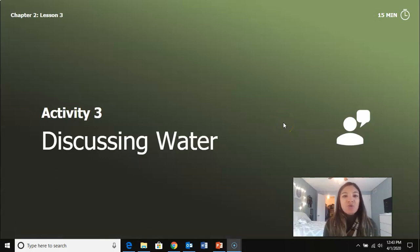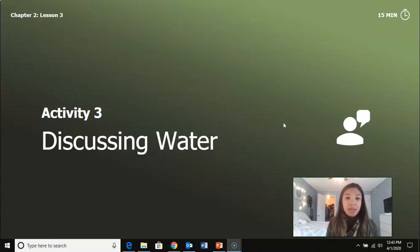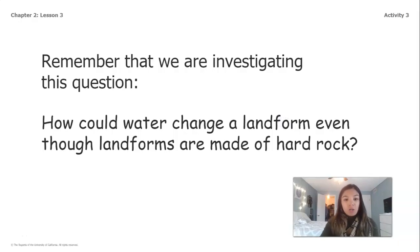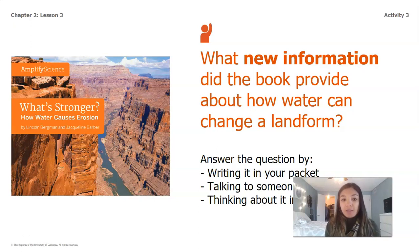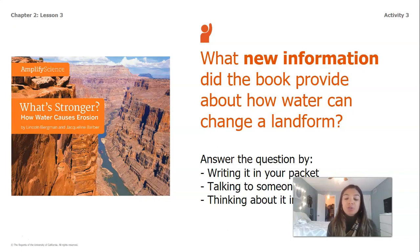All right guys, so we just listened to the story of What's Stronger, where it gave us some real world examples of how water can affect landforms. Remember that the question we're investigating is how could water change a landform even though the landforms are made of hard rock? So we're going to be thinking a lot about the examples in our book. What new information did the book provide about how water can change a landform?